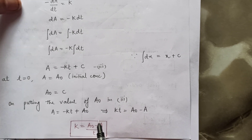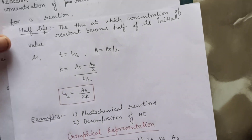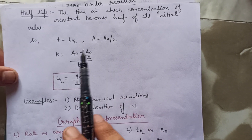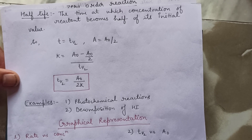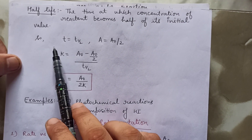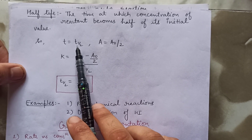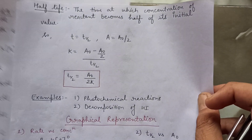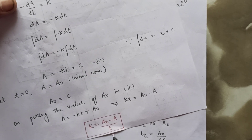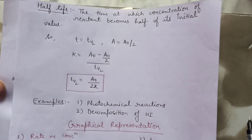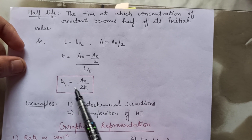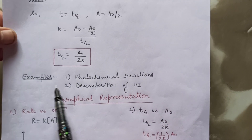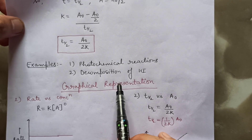The next topic is half-life. As the name suggests, half-life is the time at which the concentration of the reactant becomes half of its initial value. t is represented as t-half and a is represented as a-naught by 2. Substituting into the expression k equals a-naught minus a upon t, we get k equals a-naught minus a-naught by 2 upon t-half. Therefore, t-half equals a-naught upon 2k.